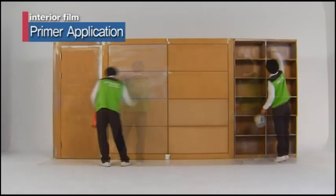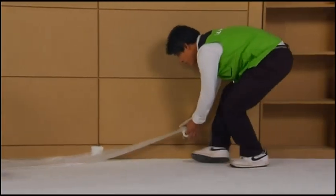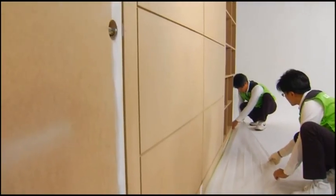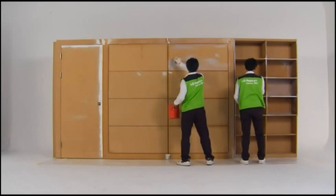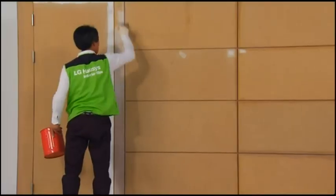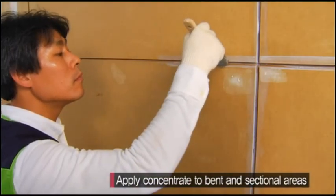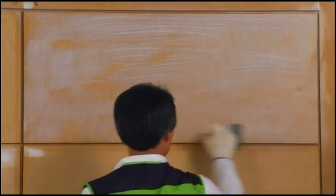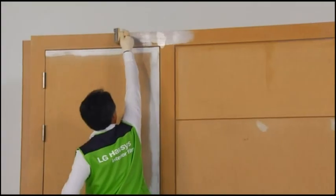Apply the primer in order to attach the interior film. Cover the floor and walls with plastic sheeting beforehand to prevent the primer from falling onto the surfaces. Spread the primer evenly on the adhesive surface. On small surfaces and corners, apply concentrated primer using a small brush. And use a large brush or roller for larger surfaces.